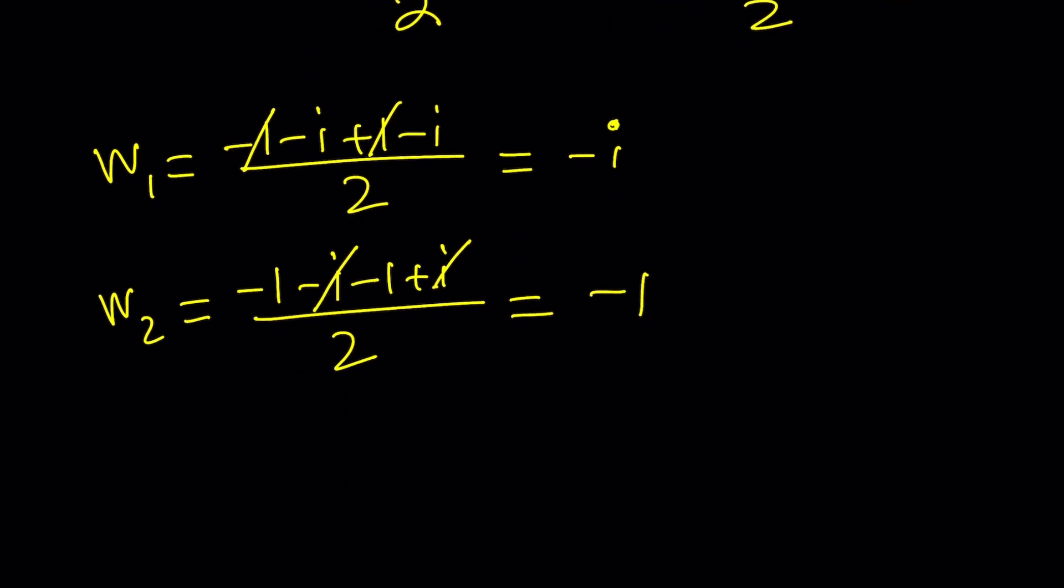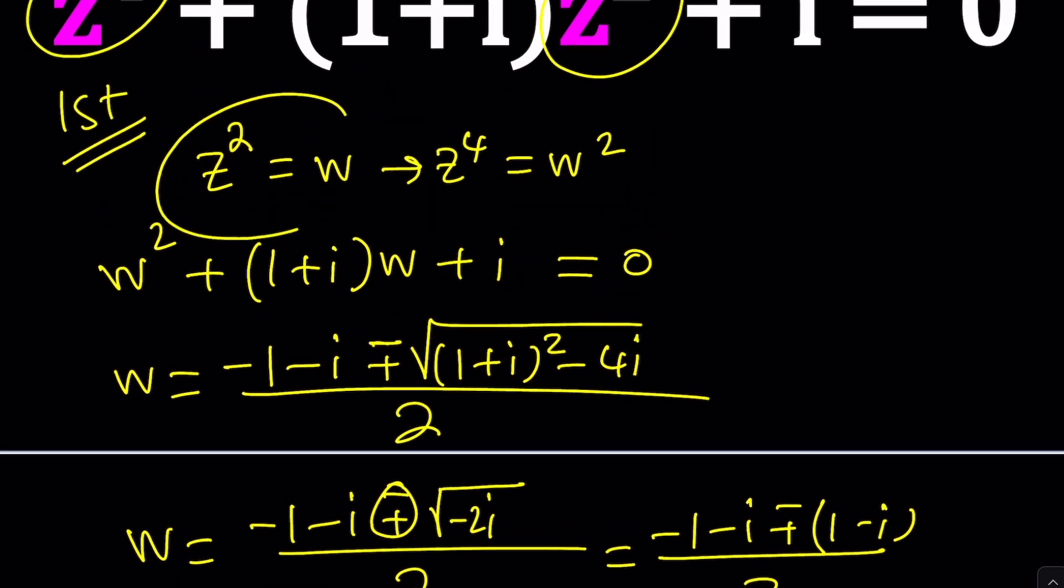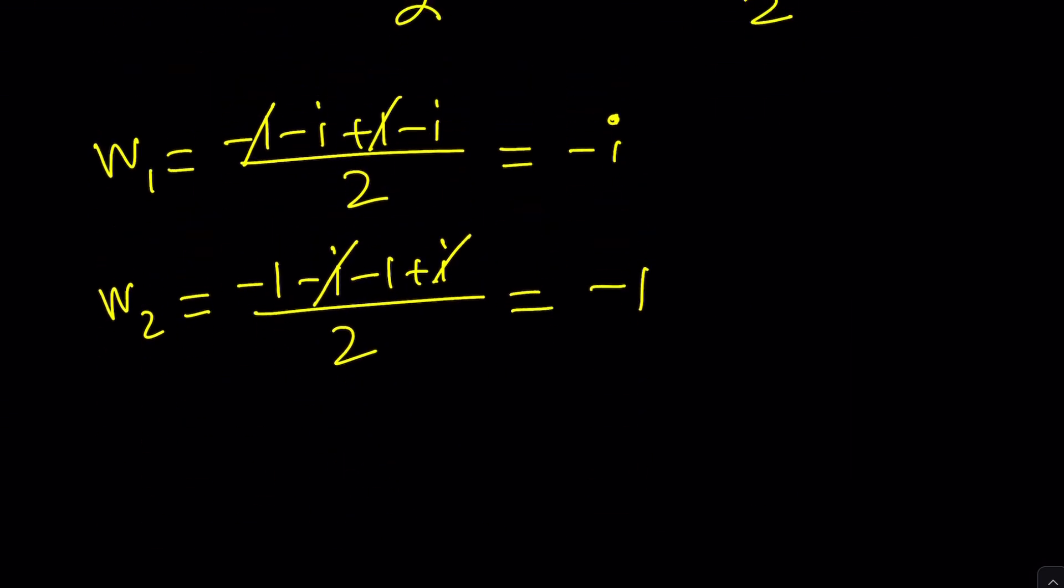And from here, we get the z values. And remember, z squared is w. So we can now replace the w's with z squared. Set each of these equal to z squared. And from here, you should find two solutions for each, which gives us a total of four solutions, right? And how do you find those solutions? Well, same method.